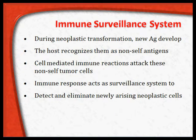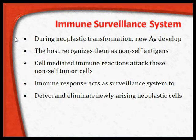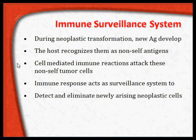In our system or in our body, we have what is called the ISS or immune surveillance system. Just like our paramilitary forces and the military forces guarding our country, we have our immune surveillance which keeps us healthy. During neoplastic transformation, a new antigen is developed on the tumor cell. The host immediately recognizes these new antigens as non-self antigens, and cell-mediated immune reactions are triggered to attack these non-self tumors by the immune surveillance system.